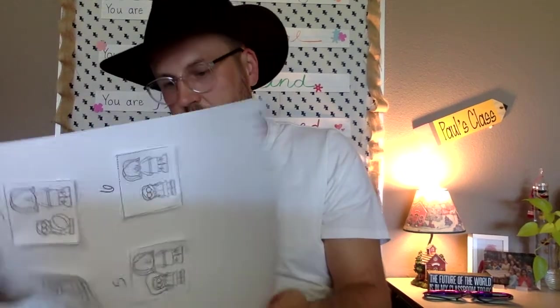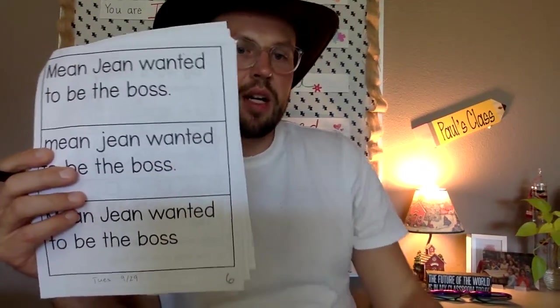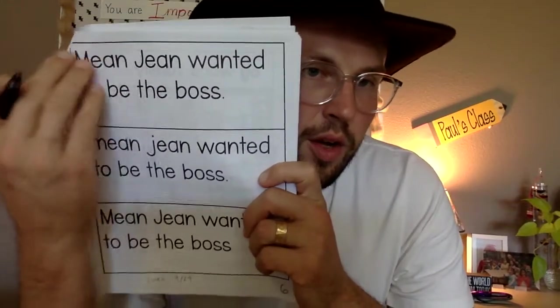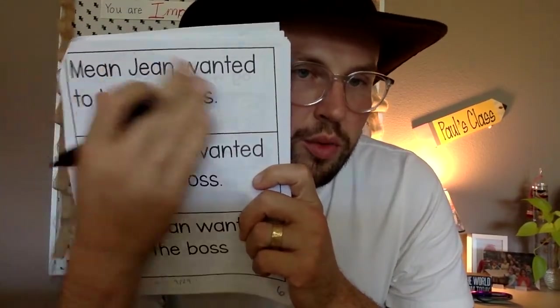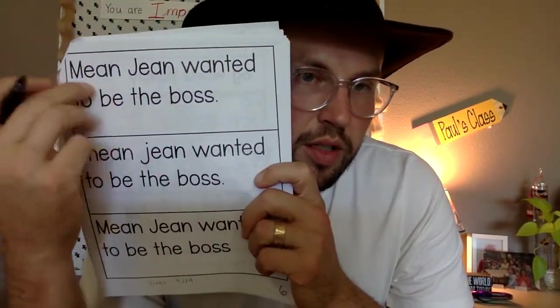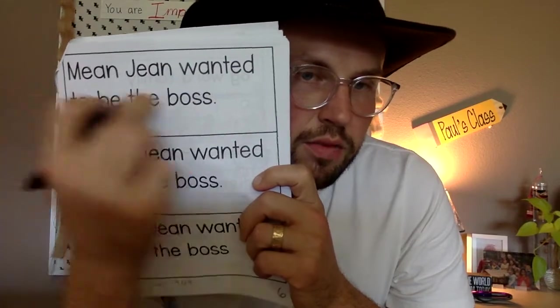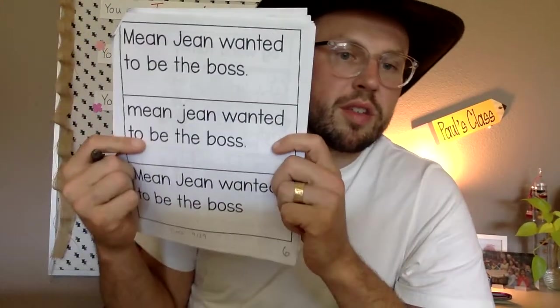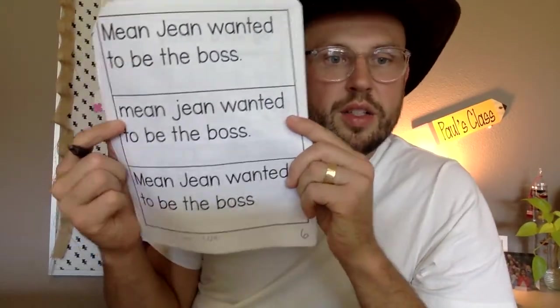When you're done with that, turn to these three sentences. 'Mean Gene wanted to be the boss' — that's a sentence written in the correct format, all words spelled correctly, in the right order, with a capital at the front and a period at the end. Let's check the next two. Does it have a capital at the beginning? Nope — cross it out.